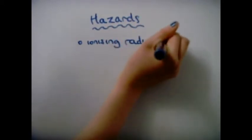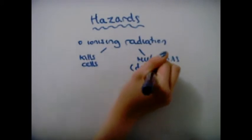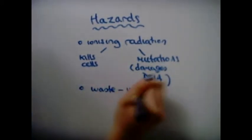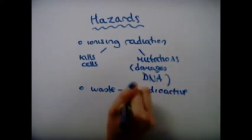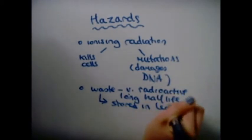Hazards. Ionizing radiation can kill living cells and cause mutations. Radioactive wastes can have long half-lives and remain highly radioactive. Therefore, they need to be stored in a sealed container made of lead and/or concrete to protect us from the radiation.